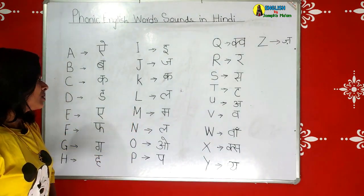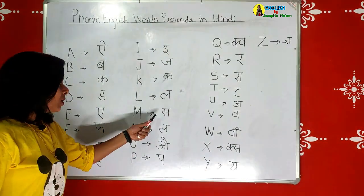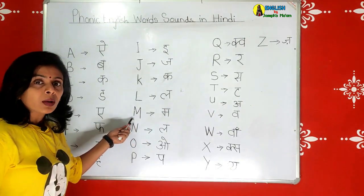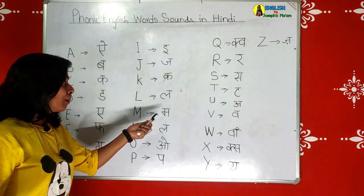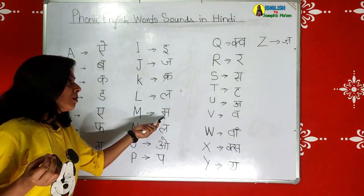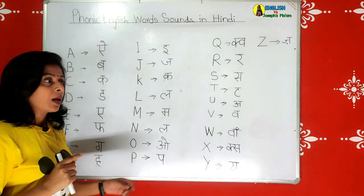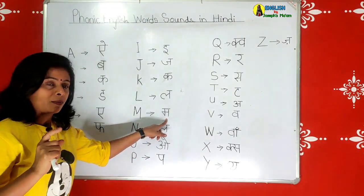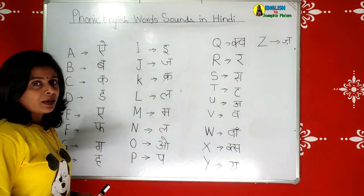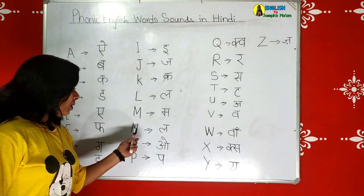Next is M. The Hindi phonic is 'ma'. M is for mango - 'ma', mango. M is also for monkey. Some say 'monkey' incorrectly - it's 'monkey', 'ma' - monkey. If you are saying it wrong, please correct it.